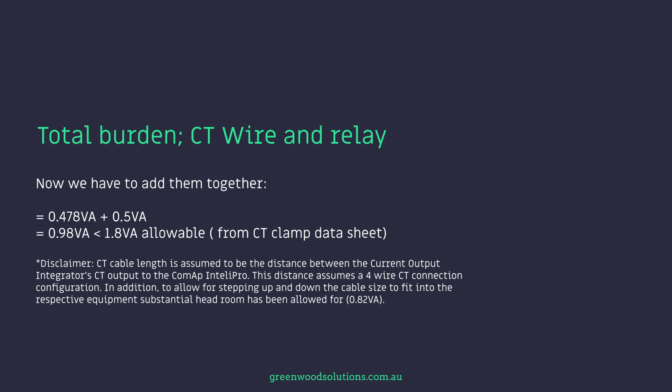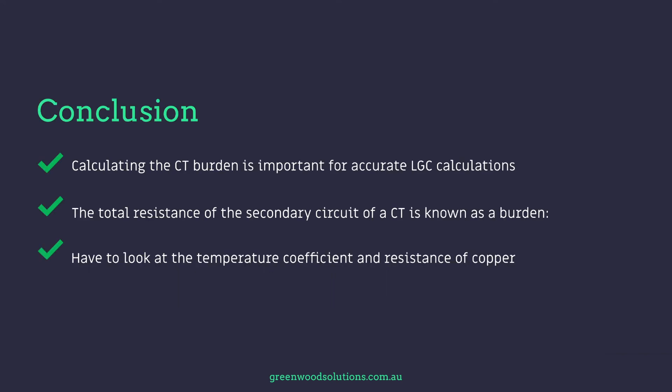Now we add them together: 0.478 VA plus 0.5 VA equals 0.98 VA, which is less than the 1.8 VA allowable from the CT CLAM data sheet. Conclusion: calculating the CT burden is important for accurate LGC calculations. The total resistance of the secondary circuit of a CT is known as a burden. You have to look at the temperature coefficient and resistance of copper, amongst other things. Thanks so much for watching our presentation on CT burdens — a really interesting concept.